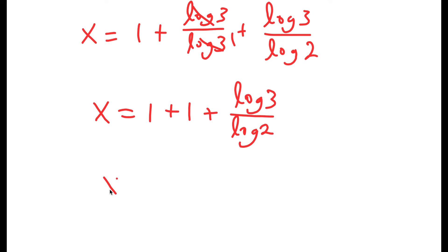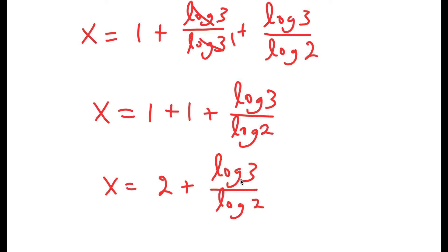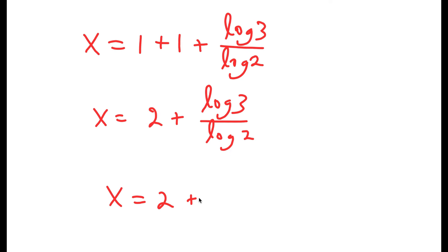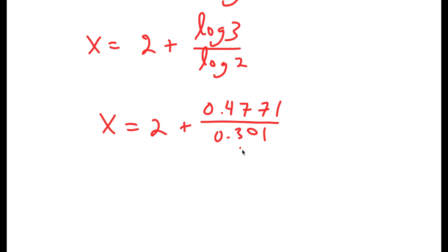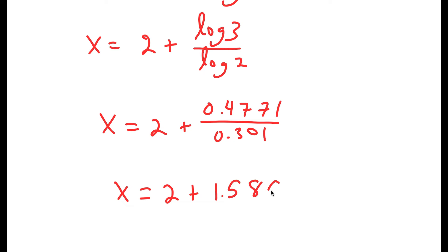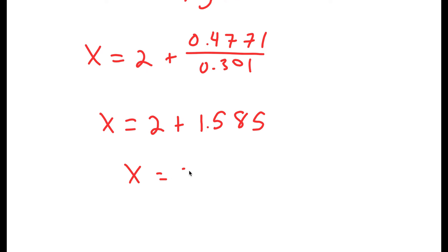Now 1 plus 1 is 2, so I get x is equal to 2 plus log 3 over log 2. Now log 3 is equal to 0.4771, and log 2 is equal to 0.301. So I get 0.4771 divided by 0.301, which is equal to 1.585. So I get x equals 2 plus 1.585, which is equal to 3.585. So this is my answer.